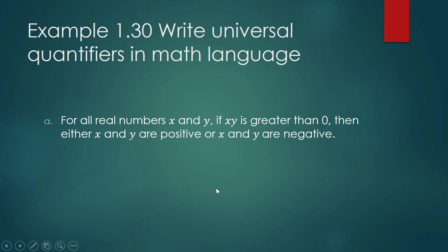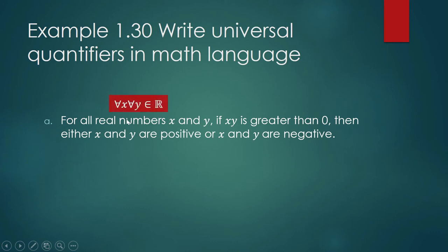Example (a): For all real numbers x and y, if x times y is greater than zero, then either x and y are positive, or x and y are negative. To write this in math language, we use the universal quantifier symbol because the phrase 'for all real numbers x and y' indicates a universal quantifier. We write: for all x and y that are elements of the set of real numbers — or simply, for all x and y that are real numbers.